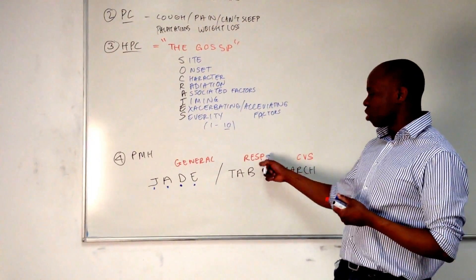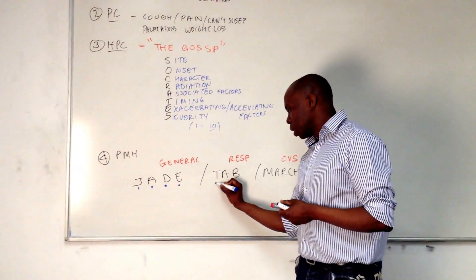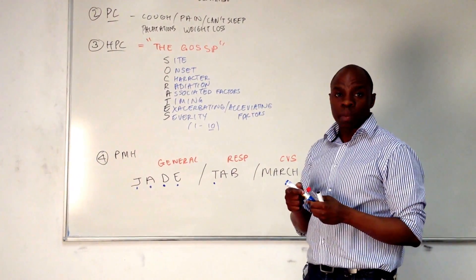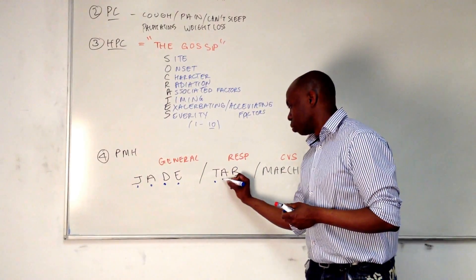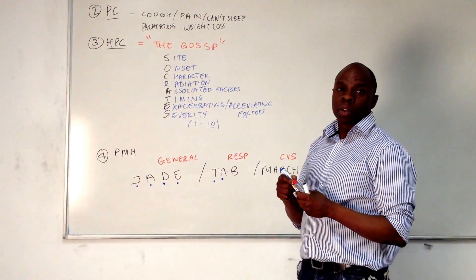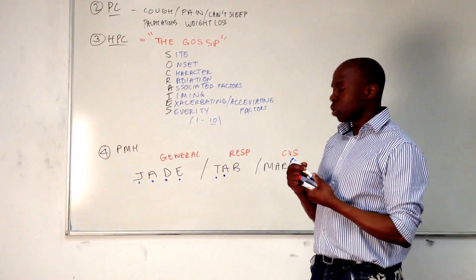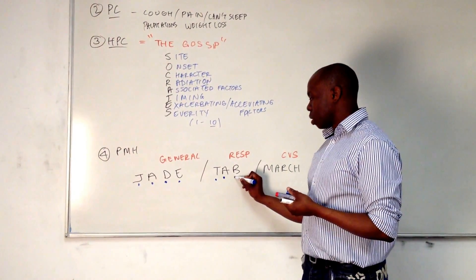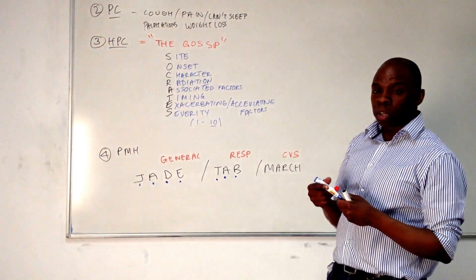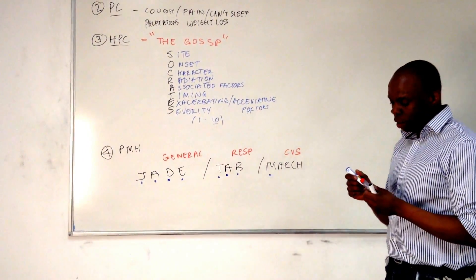Then we move on to your respiratory conditions. T is for TB — have you ever suffered from TB before? A is asthma — have you ever suffered from asthma before, or do you suffer from asthma at the moment? B is bronchitis — have you ever suffered from bronchitis before? Then we move on to cardiovascular.